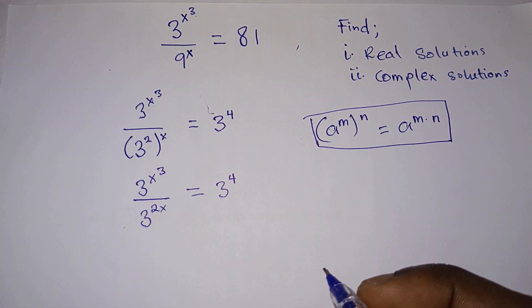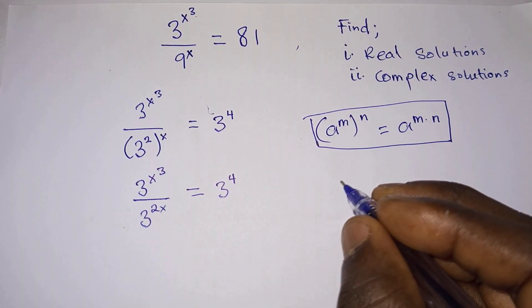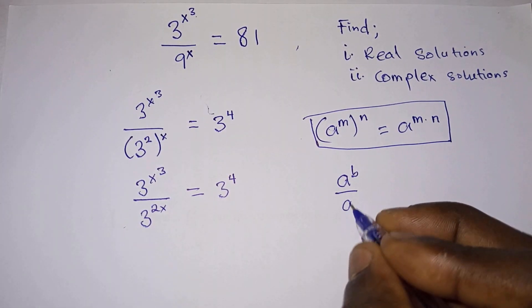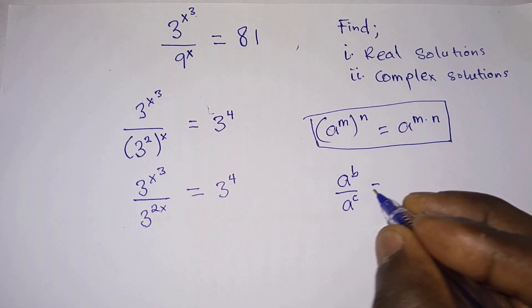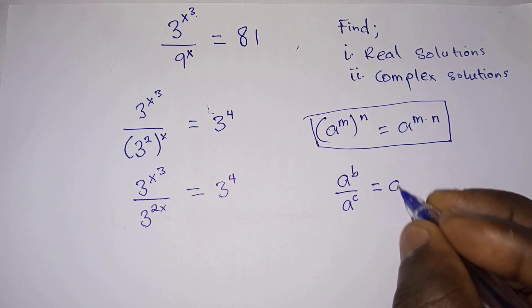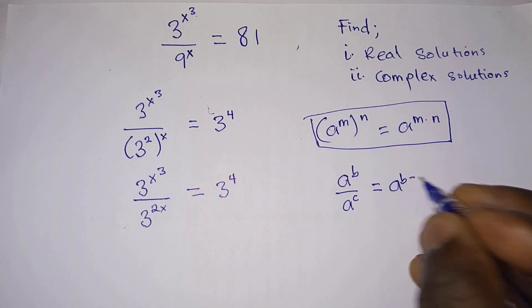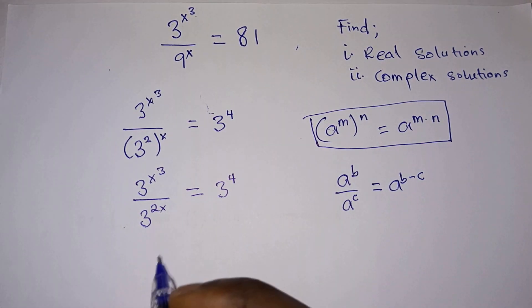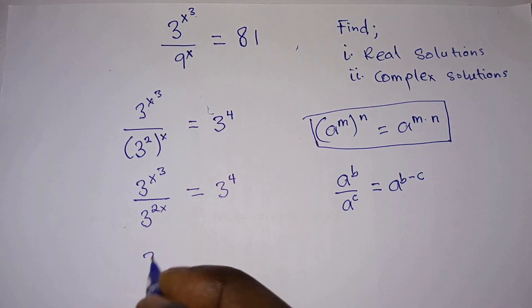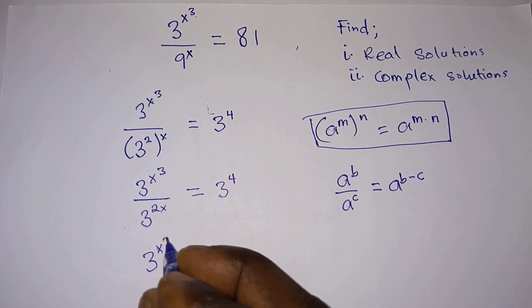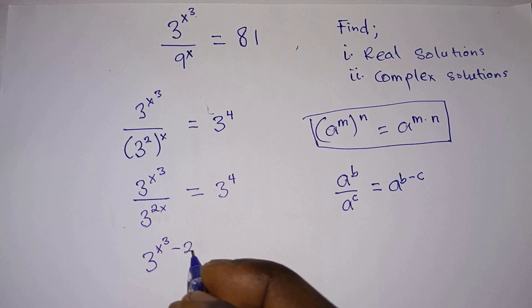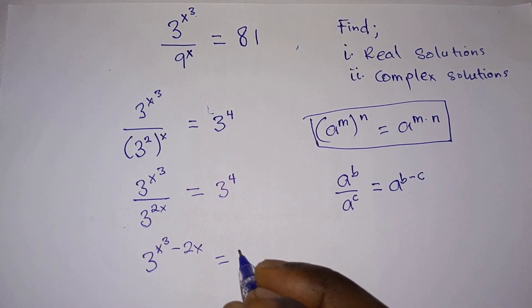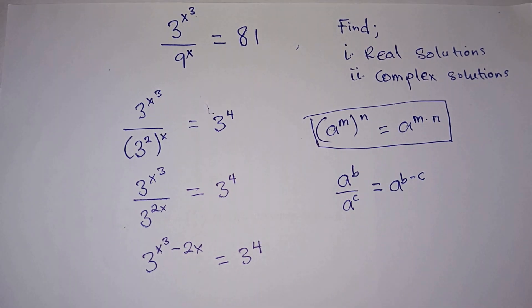Then another rule states that a to the power b divided by a to the power c is the same as a to the power b minus c. So we can write the left-hand side as 3 to the power x³ minus 2x, equal to 3 to the power 4.